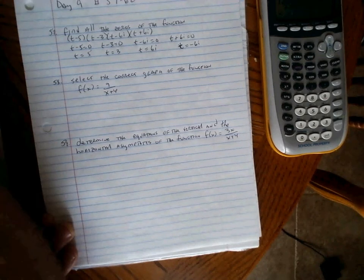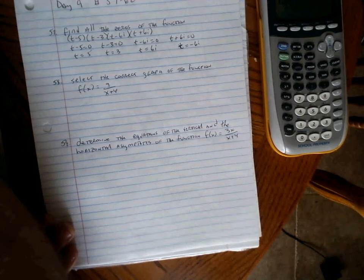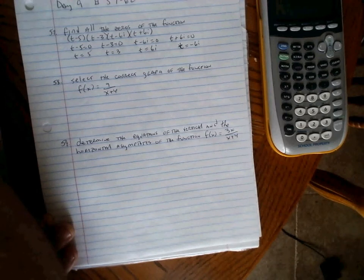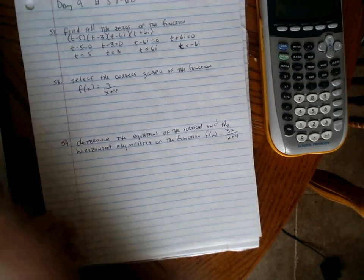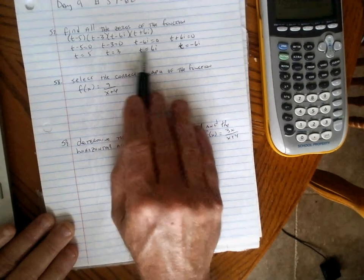Sorry, I touched the screen and lost it. Number 57 says 5, 3, plus or minus 6i. That's answer C.